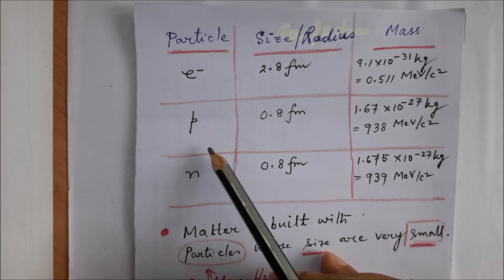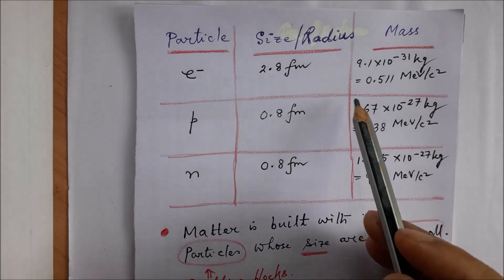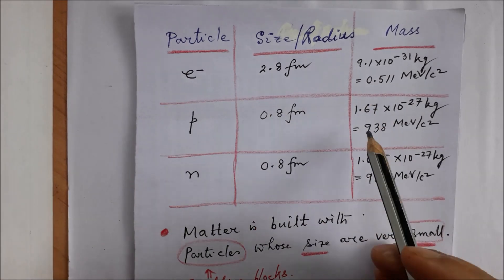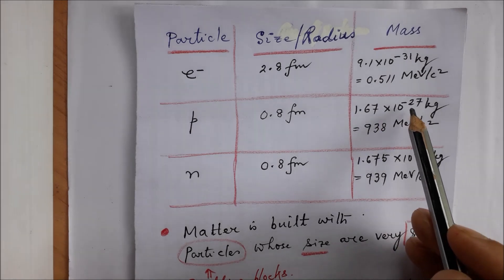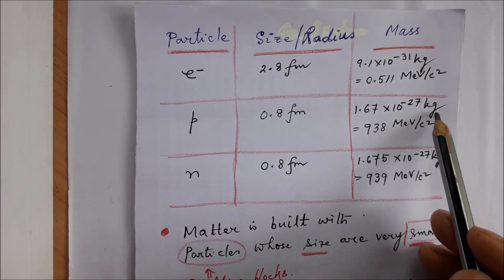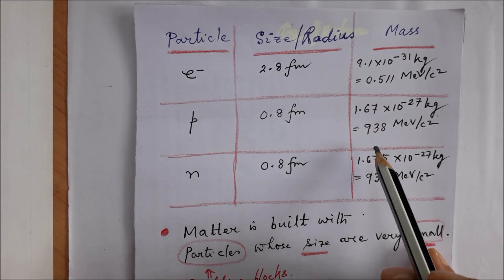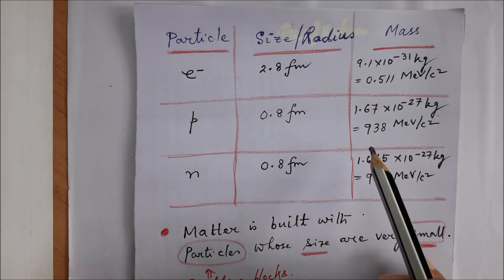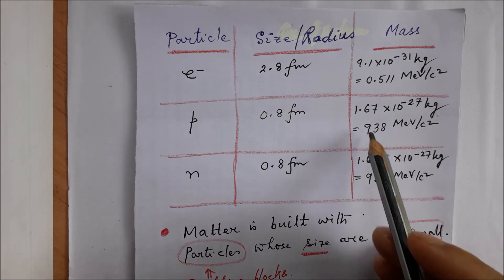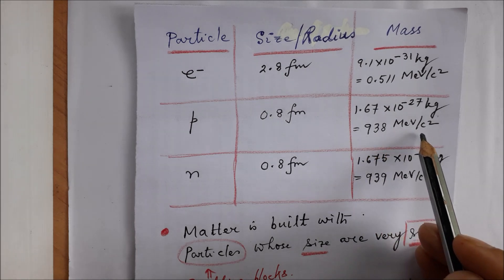Proton is a heavy particle, almost 2000 times heavier than electron, and it is 1.67×10^-27 kg which, when converted to energy units through Einstein's famous equation E = mc², turns out to be 938 MeV/c².